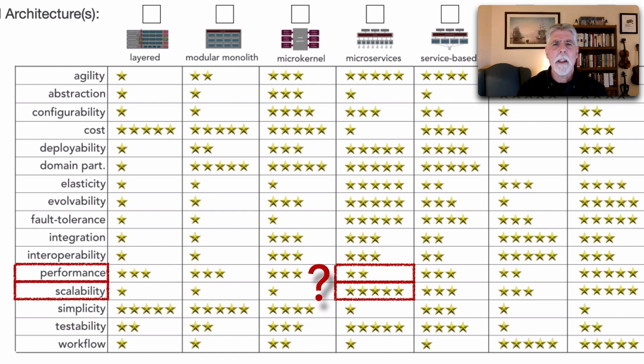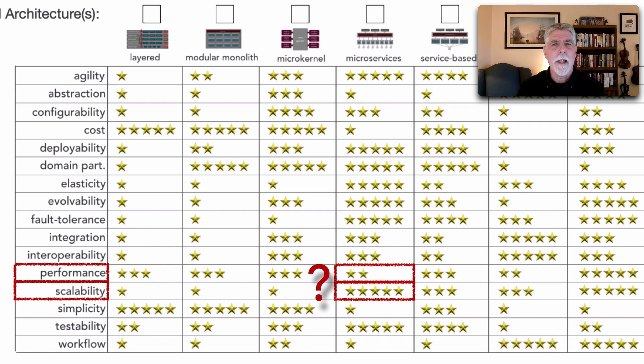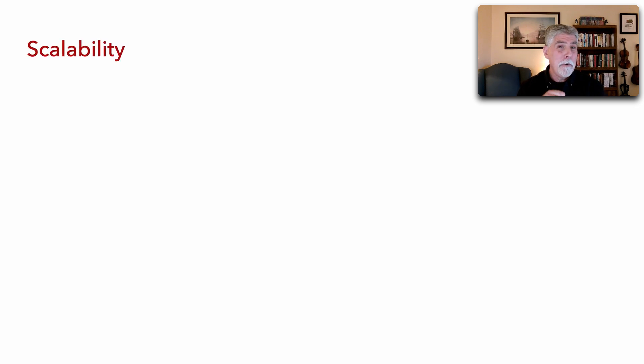I provided an answer, but several other people had the same question. Shouldn't these both be high or low? And it made me think I should do a lesson about this. I want to explain the relationship between scalability and responsiveness and performance, and then answer that question about two stars and five stars.